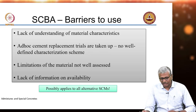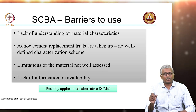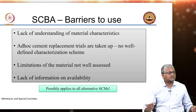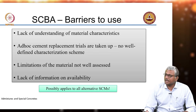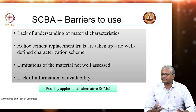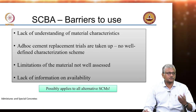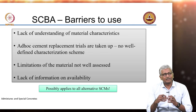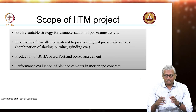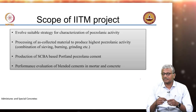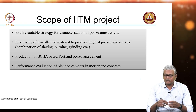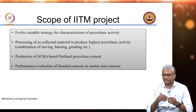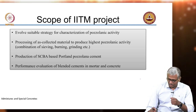Often when ash is dumped it is not from a single agricultural source — sometimes you get mixed ashes from wheat straw, rice straw, sugarcane bagasse, and rice husk all together. So you really need to do a good job of characterizing these materials and understanding their reactivity before using in concrete. At IITM, the strategy was to evolve suitable characterization methods, process the ash to produce the highest pozzolanic activity, produce sugarcane bagasse ash-based Portland pozzolan cement, and evaluate these blended cements in mortar and concrete.